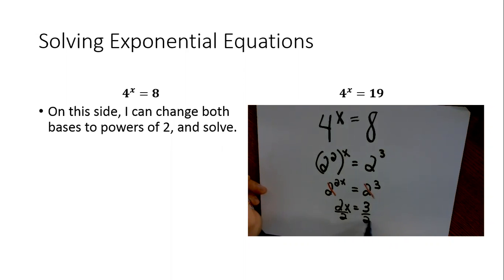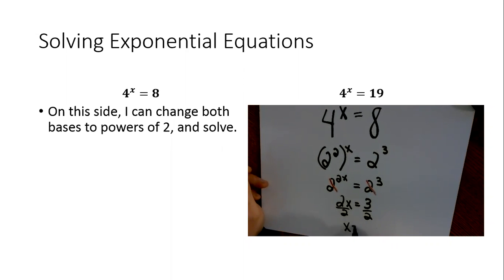And then just divide by 2, and I get X equals 3 over 2. So that's not too bad. But what are the chances that our bases are always going to be the same? Probably not that great.